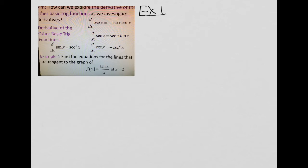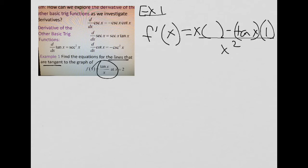So if we need the lines that are tangent, then I need f prime of x. And this is a fraction, so I need the quotient rule. So bottom, derivative of the top, minus top. Remember that's got to stay together, the angle and the trig function. Times the derivative of the bottom over the bottom squared.